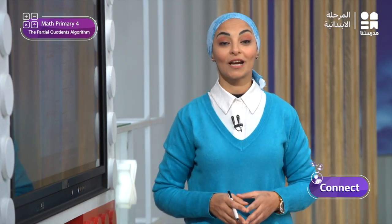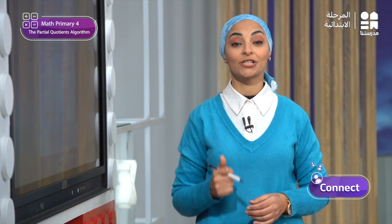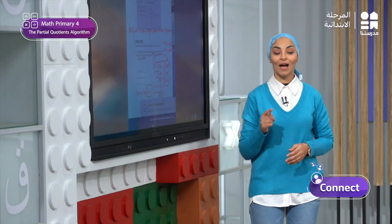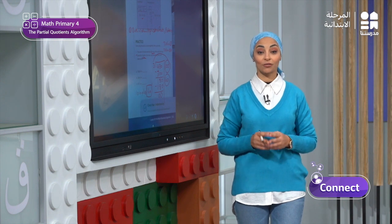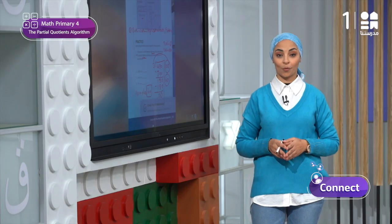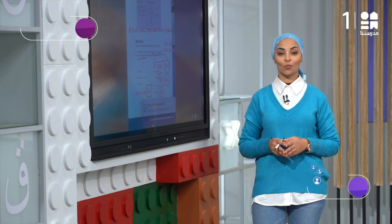This is the end of our lesson. Today we learned a new strategy for division called the partial quotients algorithm. In the previous lesson we learned the area model for division. In coming lessons we will learn new strategies to solve division problems. If you need more practice, you can scan the QR code on page 311. Thank you so much for watching, and see you soon.